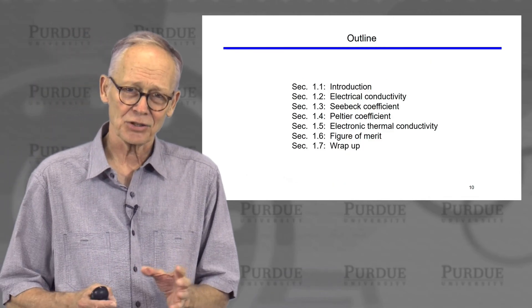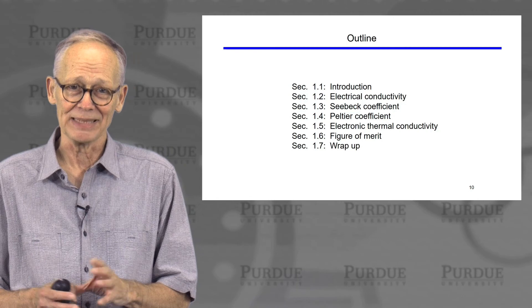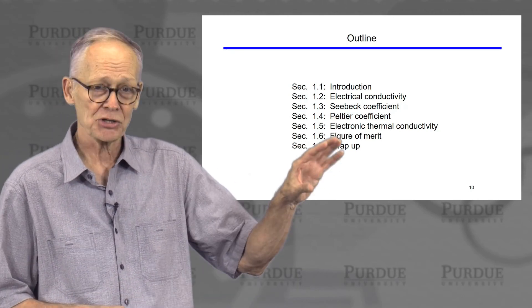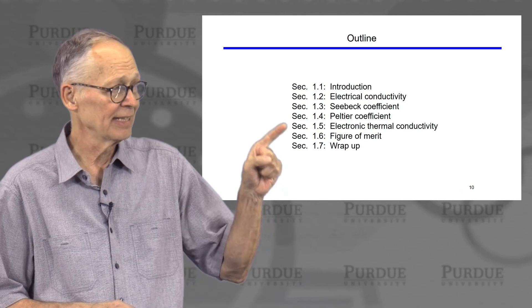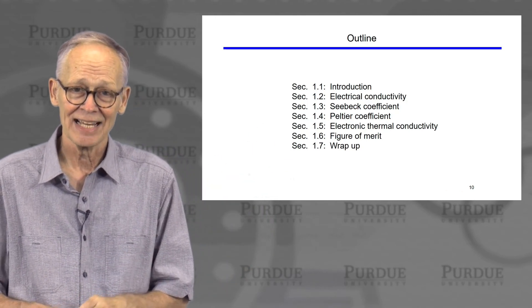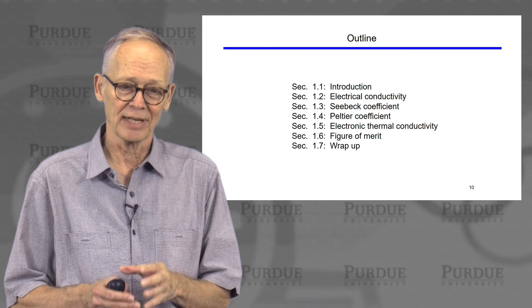Now, there's a lot to talk about, and I've broken it up into pieces. So we'll march through. We'll begin by talking about the electrical conductivity, then the Seebeck coefficient, then the Peltier coefficient, then the electronic thermal conductivity.